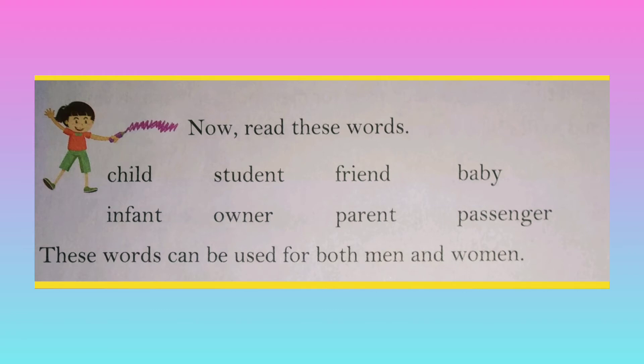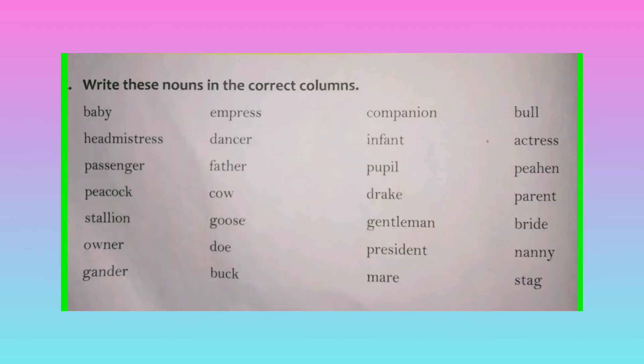Now look at the nouns given in exercise C. What you have to do in this exercise is: firstly, identify which type of gender each noun belongs to — whether they are masculine, feminine or common. Then write them in their respective columns.